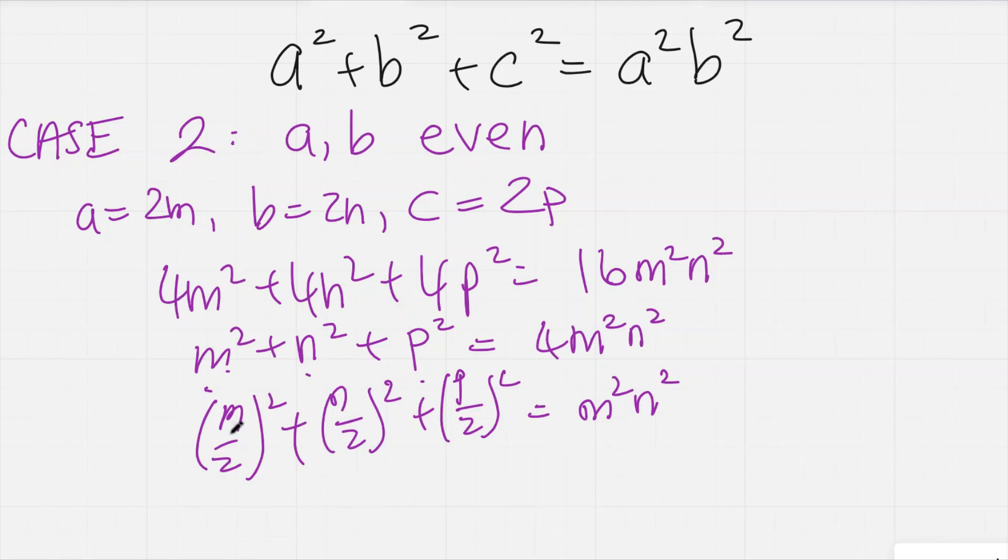Now we know that m, n, and p are all even. So in particular, m and n are even. So this right-hand side here is even.